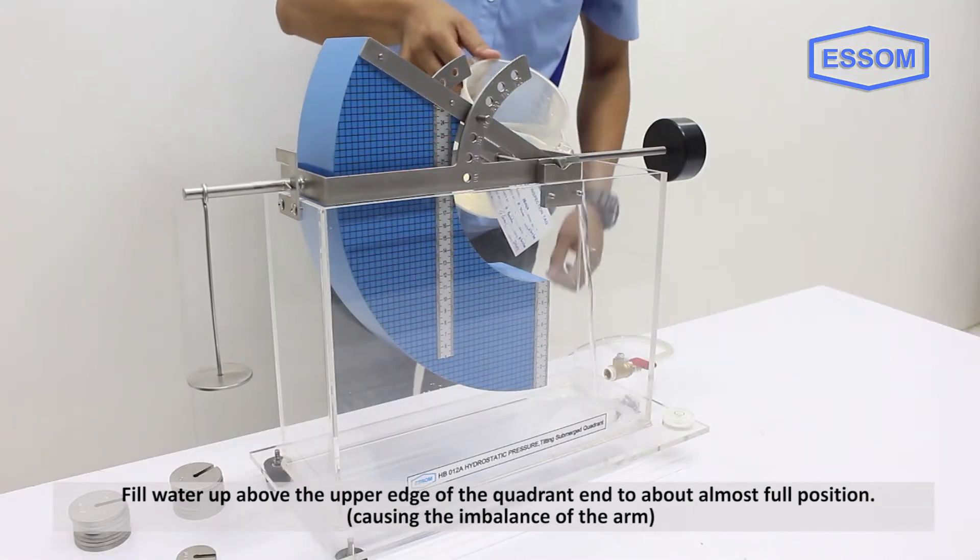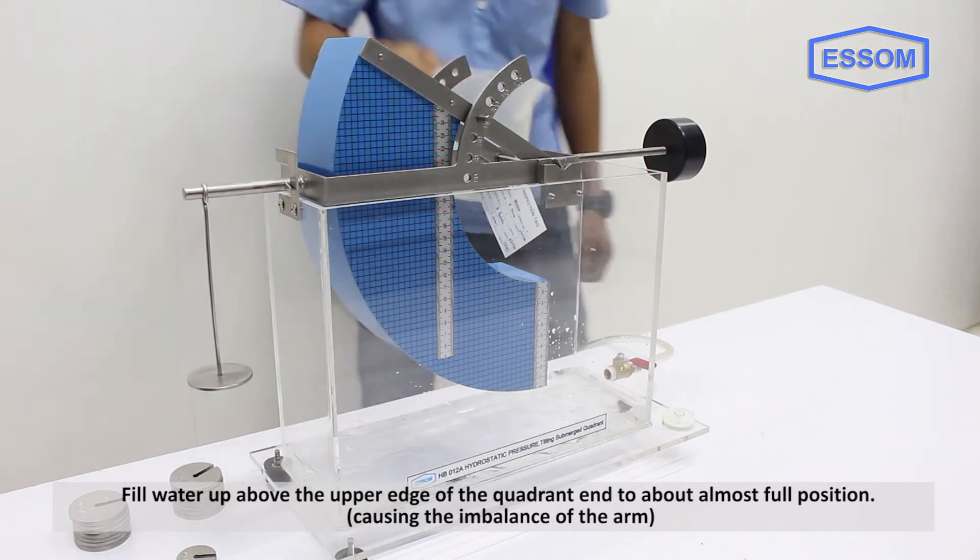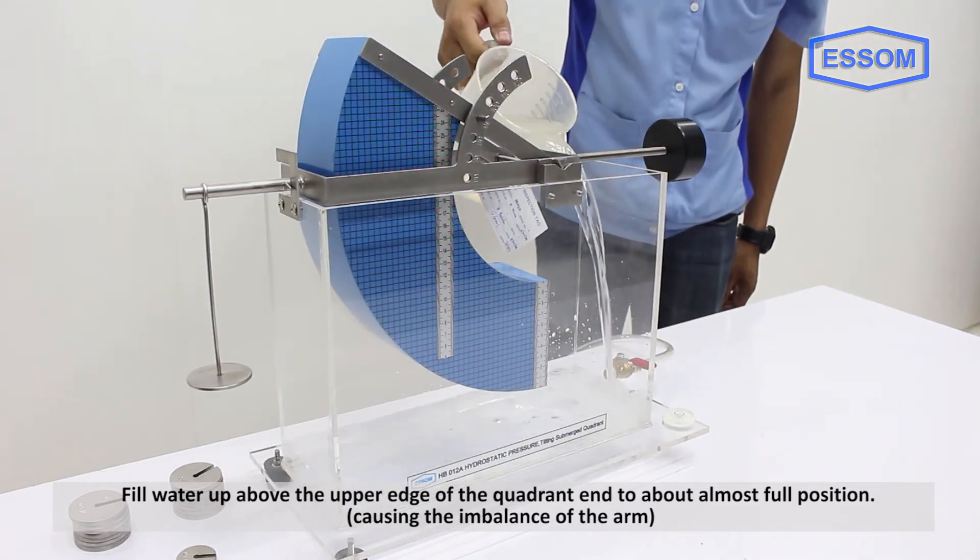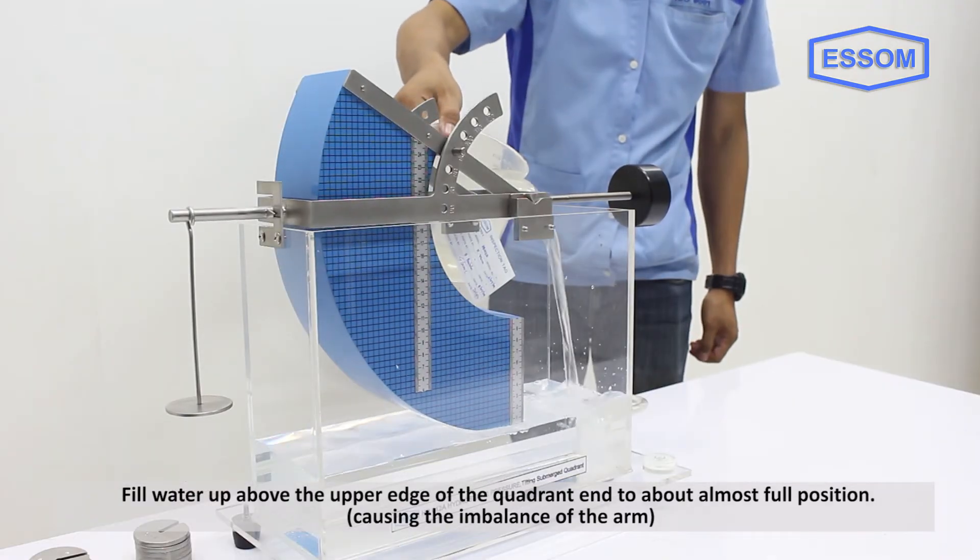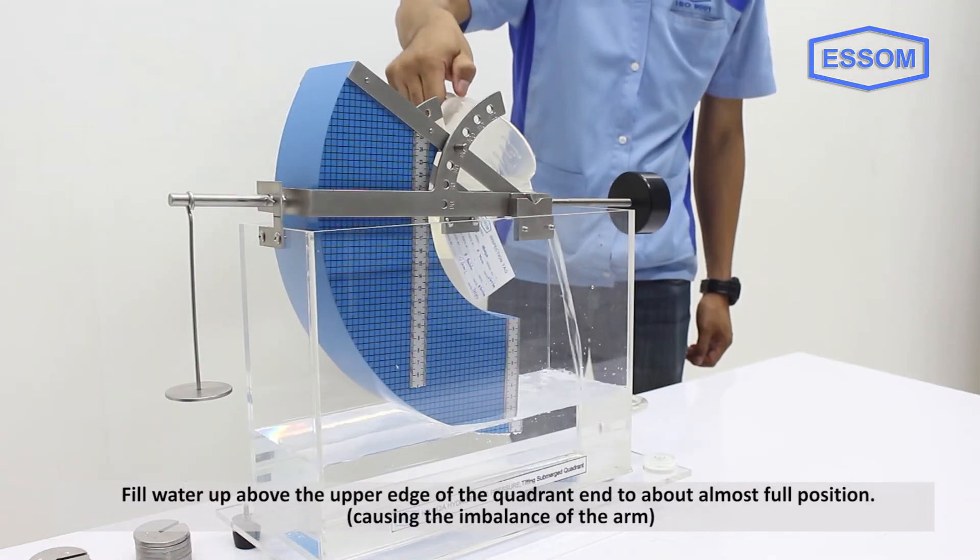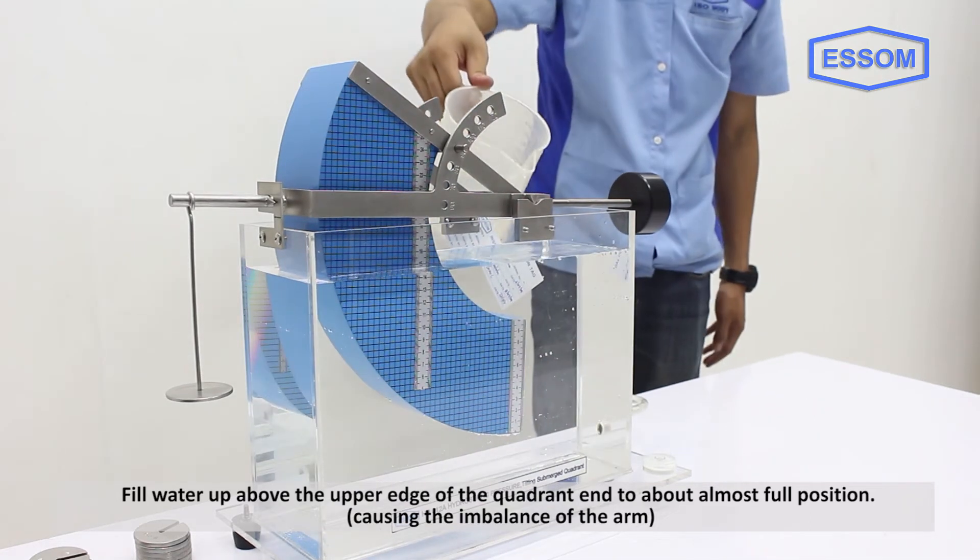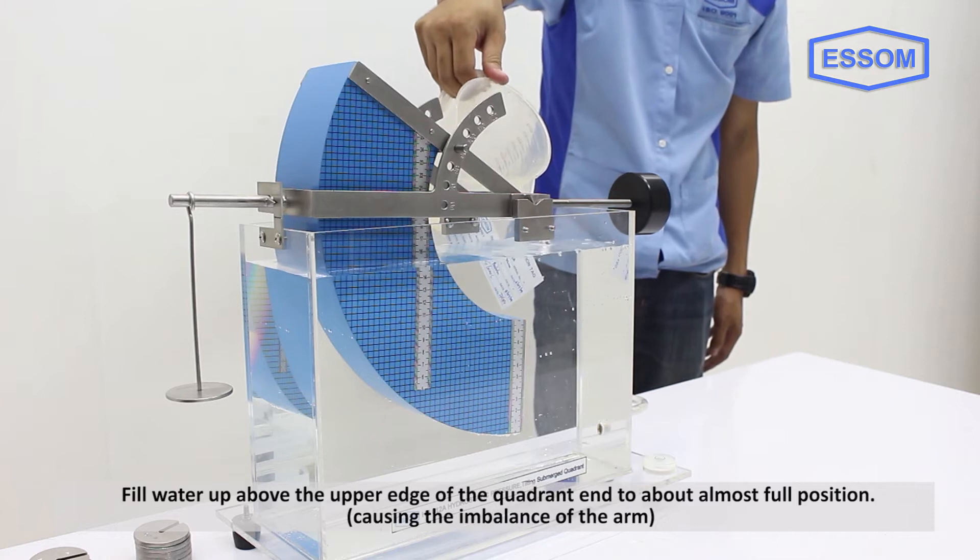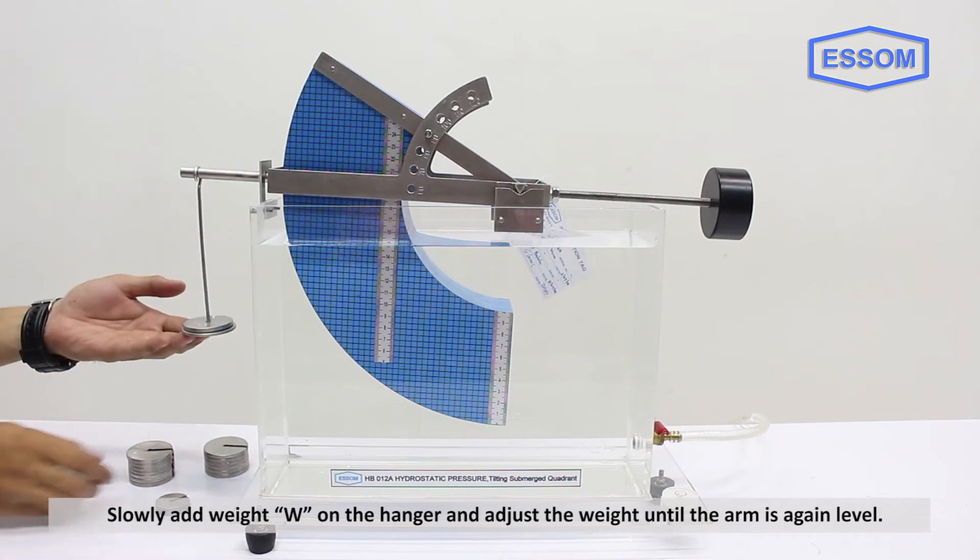Fill water up above the upper edge of the quadrant end to about almost full position, causing the imbalance of the arm. Slowly add weight W on the hanger and adjust the weight until the arm is again level.